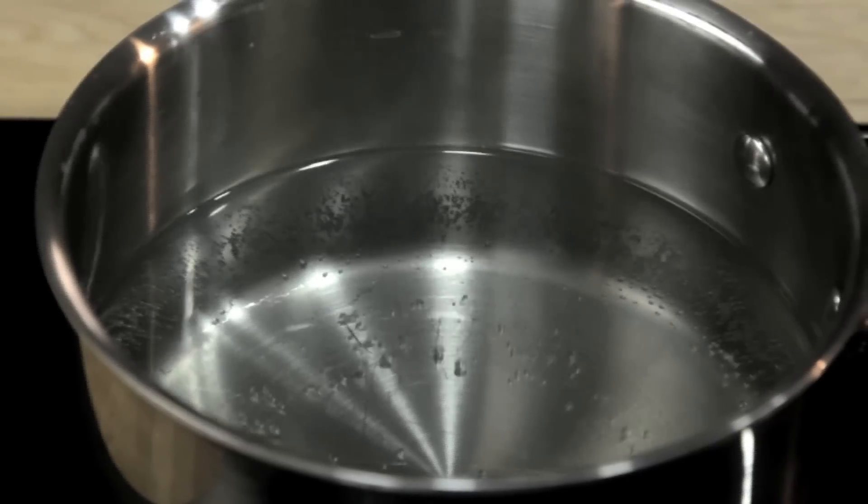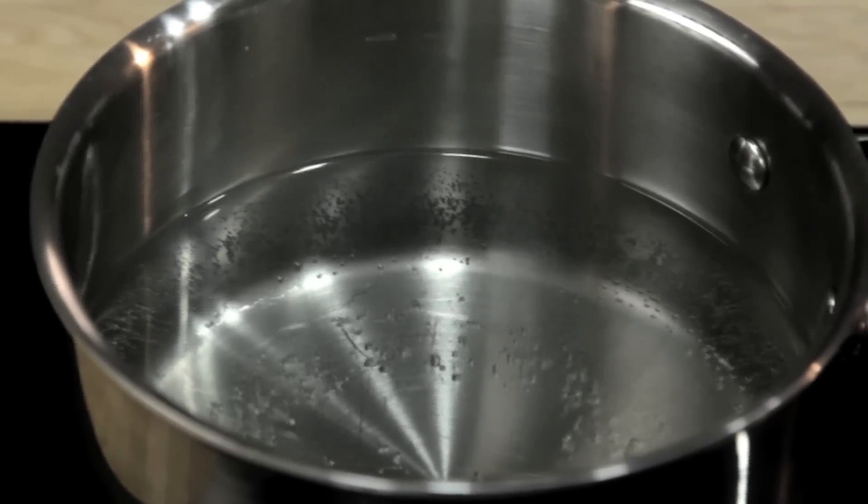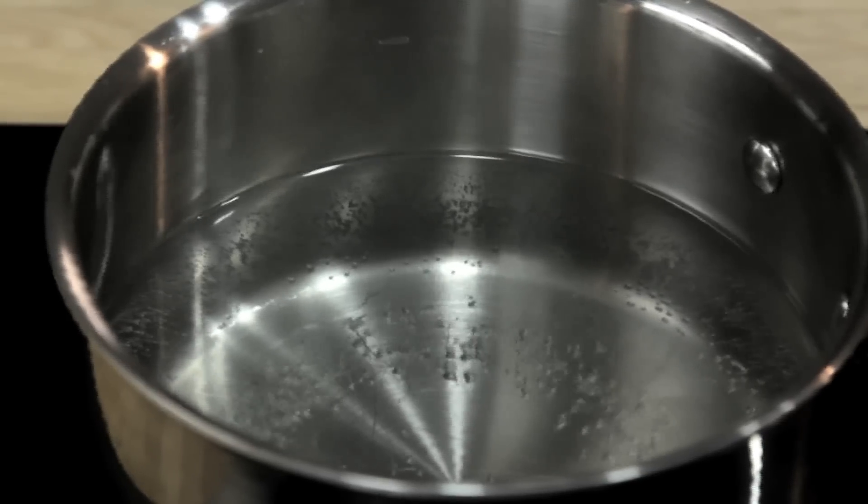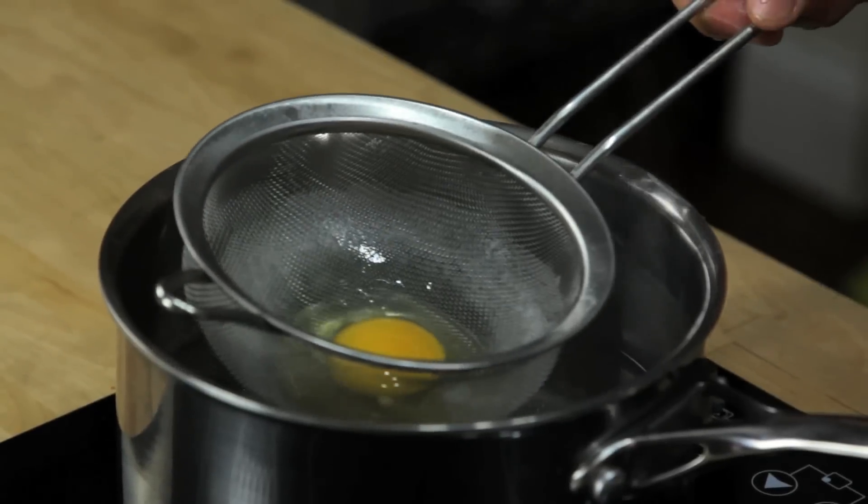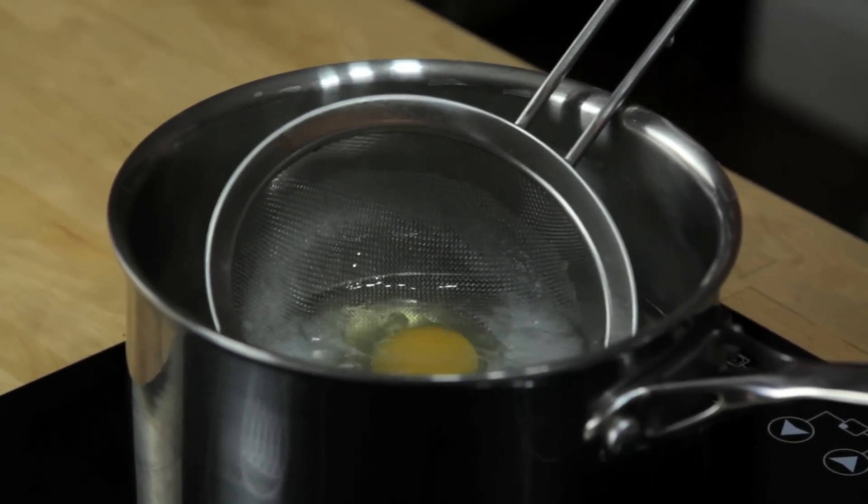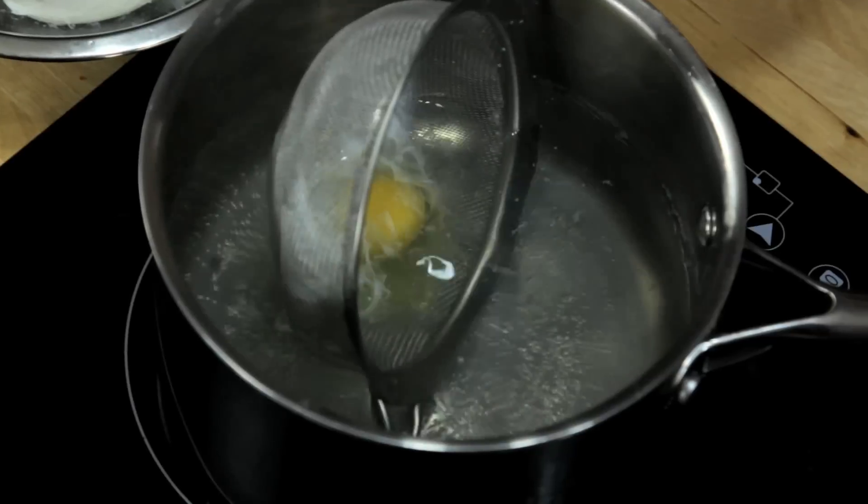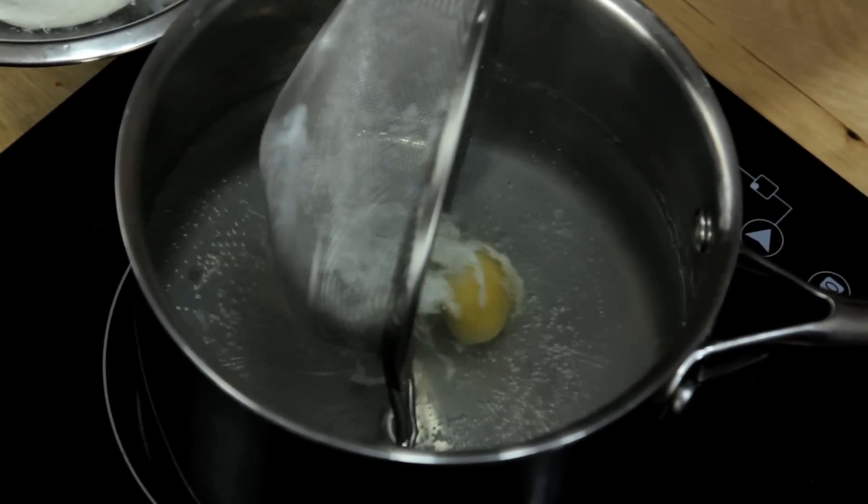What I've got here is a pot of water at 180 degrees Fahrenheit, which is just about the temperature that the water is quivering but not quite simmering yet. All I'm going to do is gently lower the strainer with the egg into the water, move it back and forth a little bit to make sure the egg isn't stuck, and then carefully roll the egg out.